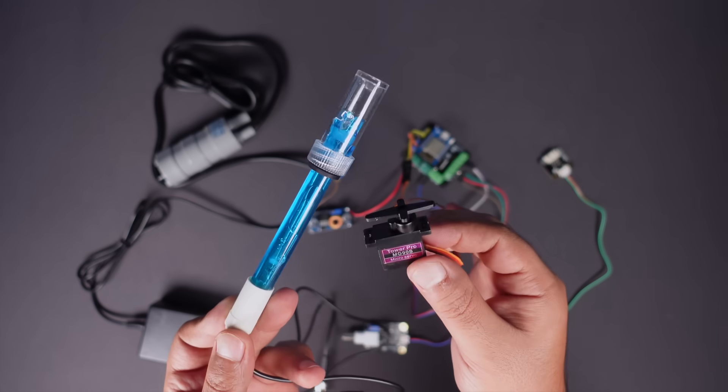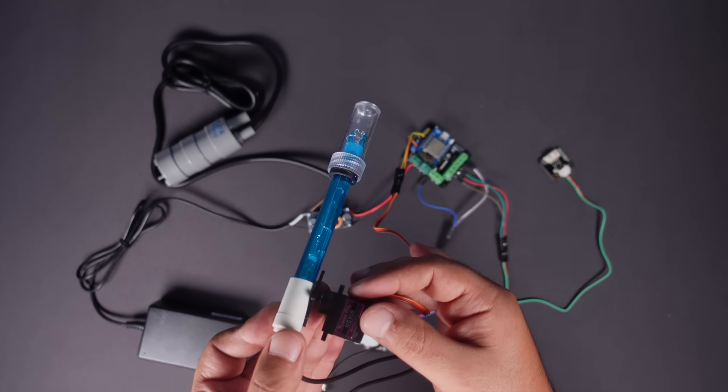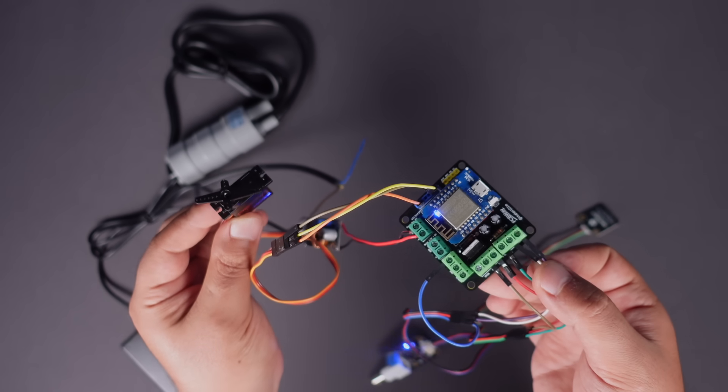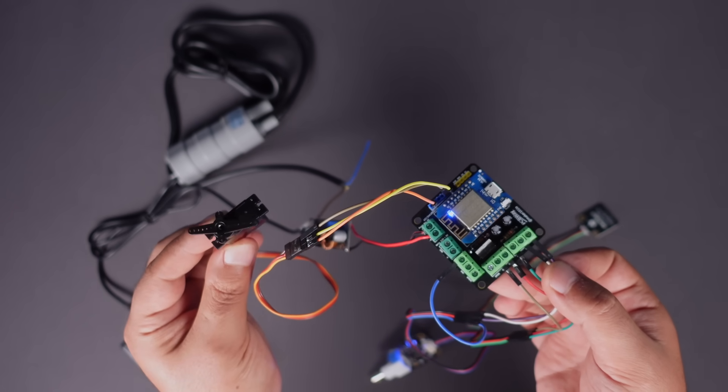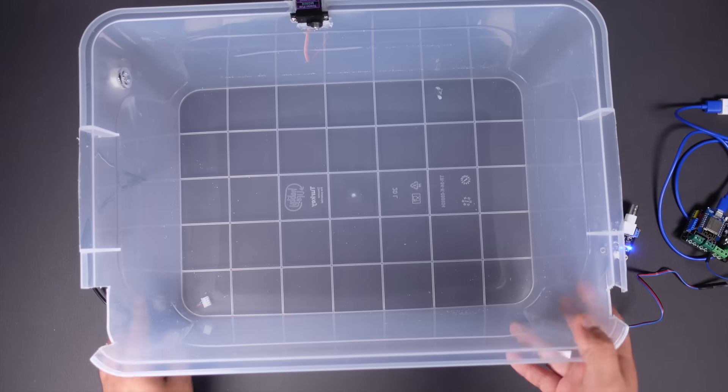Finally, we added a mini servo motor to the circuit in order not to expose the pH meter to the liquid continuously. A simple and basic servo motor control code was used to immerse the pH meter in and out of the liquid at the specified time interval. In the next step, we will prepare the water tank.